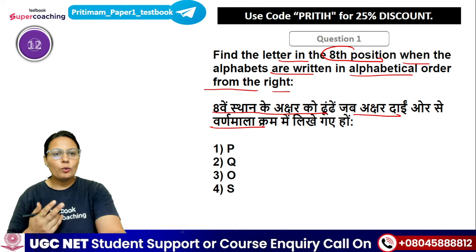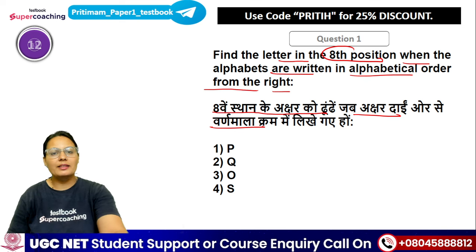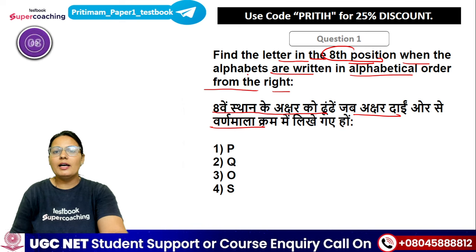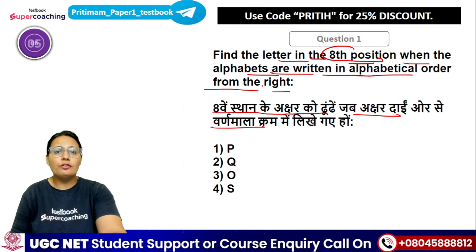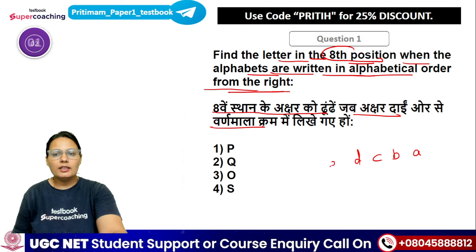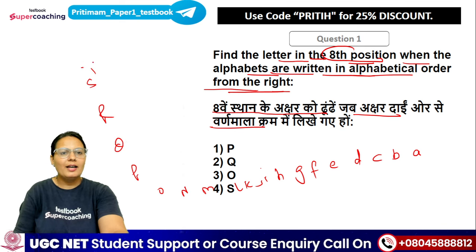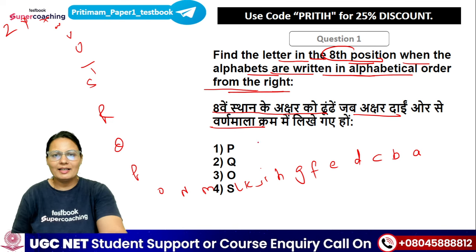Writing alphabets from right: Z, Y, X, W, V, U, T, S, R, Q, P, O, N, M, L, K, J, I, H, G, F, E, D, C, B, A. Now find the 8th position in this order — from the right, starting with Z.